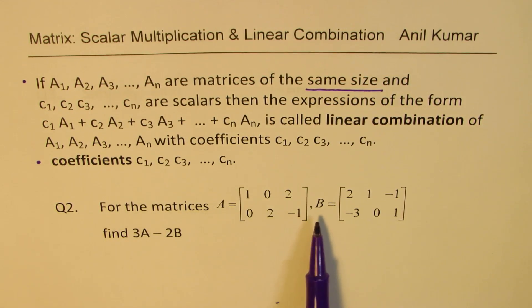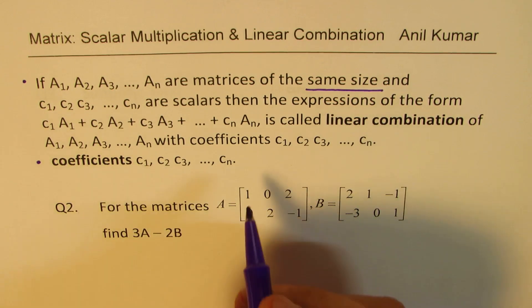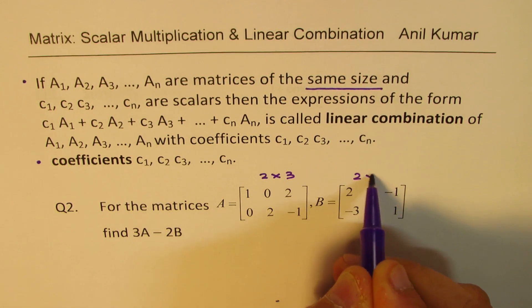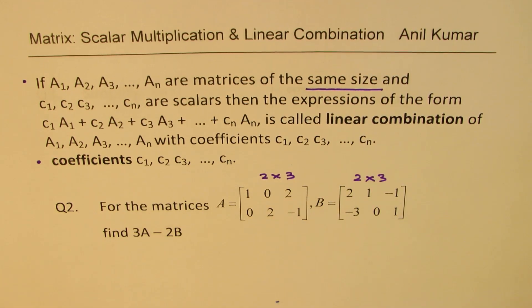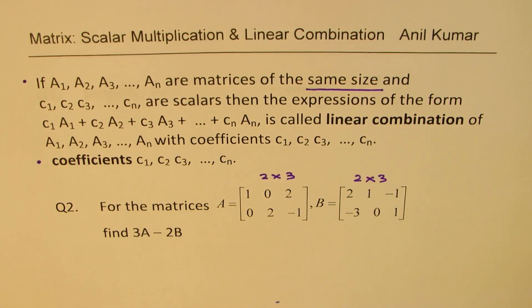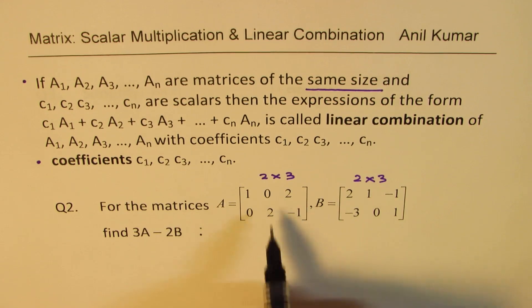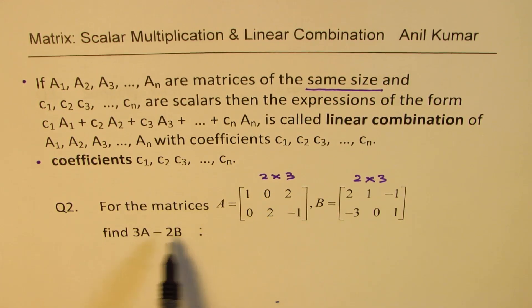For the matrix A and B, see both are of the same size, so we have two by three matrices, both of them. Now we can talk about linear combination. Example here is to find three times A minus two times B. So we'll do first scalar multiplication and then we'll do the combination.